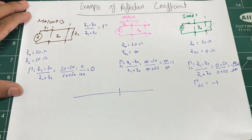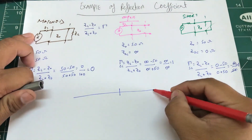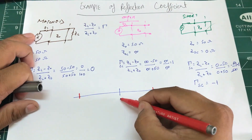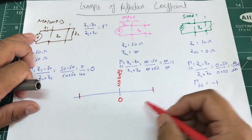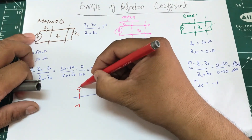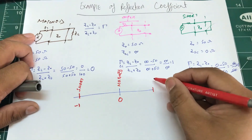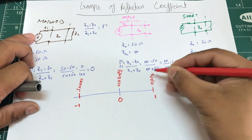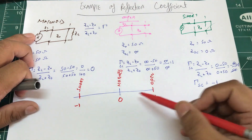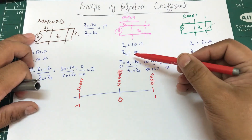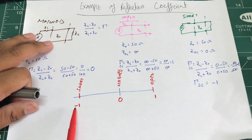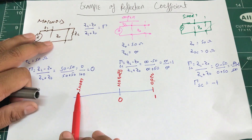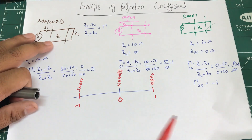Let's draw a number line. The matched scenario sits at zero in the middle. Negative one corresponds to the short circuit, and positive one corresponds to the open circuit. These are the two extremes: open circuit where impedance is infinity, and short circuit where impedance is zero.